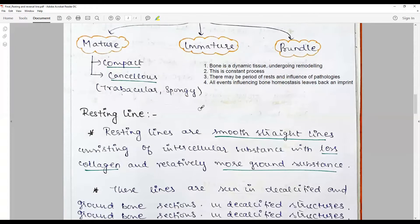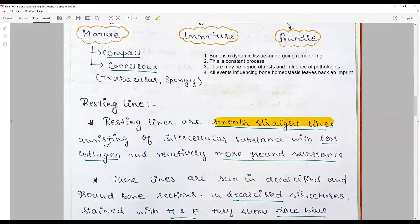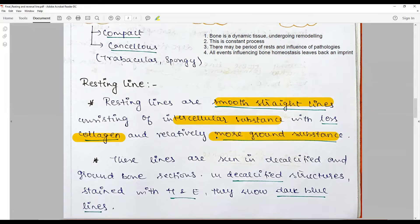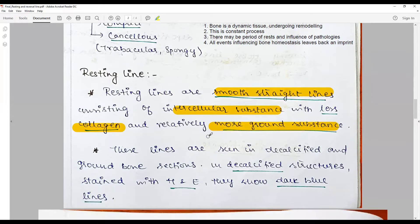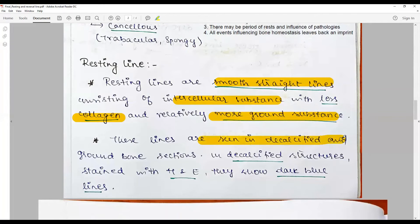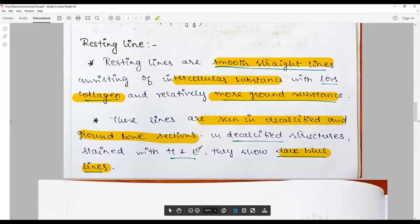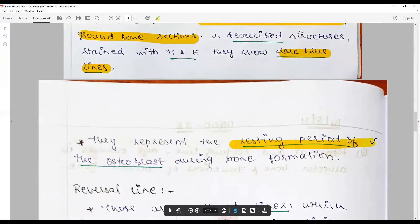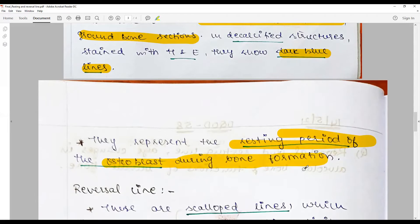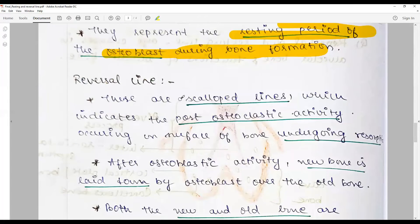Resting lines are smooth straight lines consisting of intercellular substance with less collagen and more ground substance. They are the period of quiescence, seen in decalcified and normal ground bone sheets. In decalcified and stained H&E they show as dark blue lines. They represent the resting period of the osteoblast during bone formation. This is the most important point.